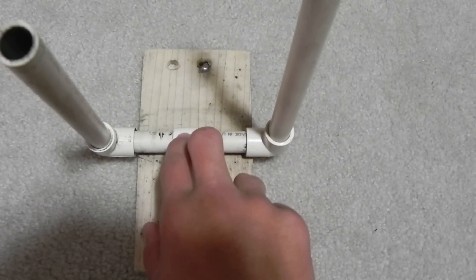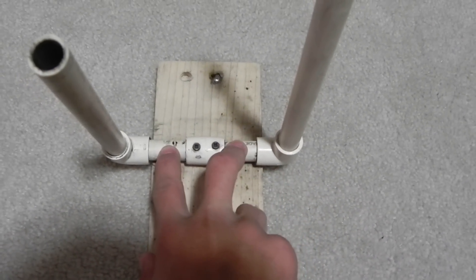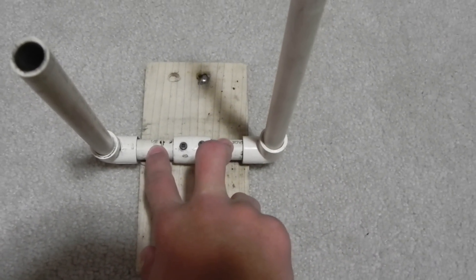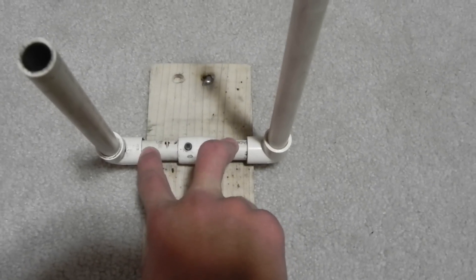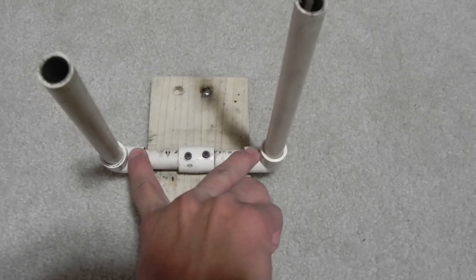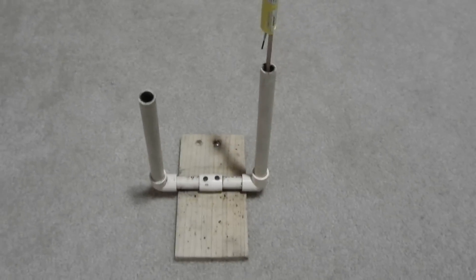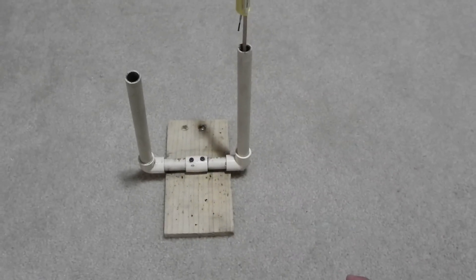So it's held onto the board with two screws and it comes out to two three-inch sections of tube. And then you've got two 90-degree elbows into about 10-inch sections.